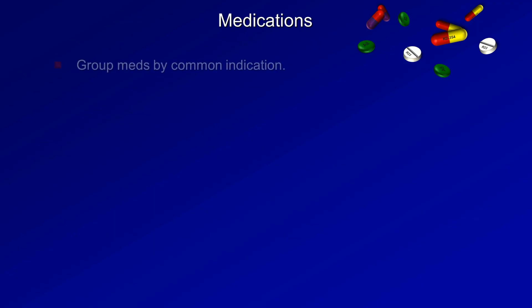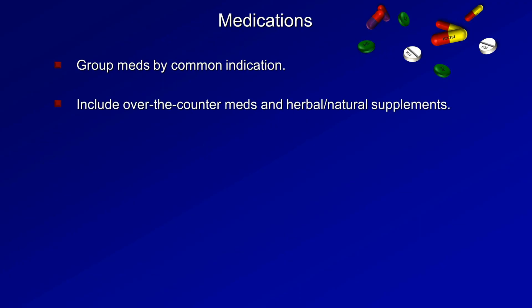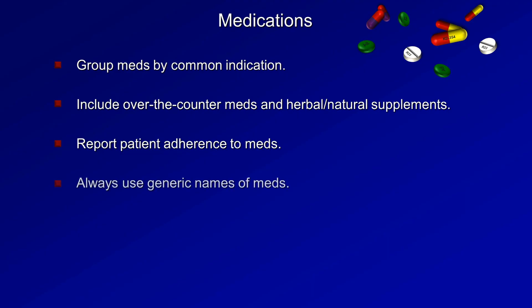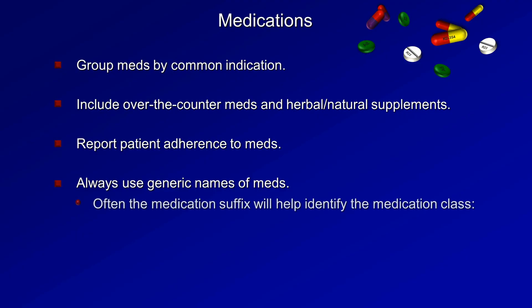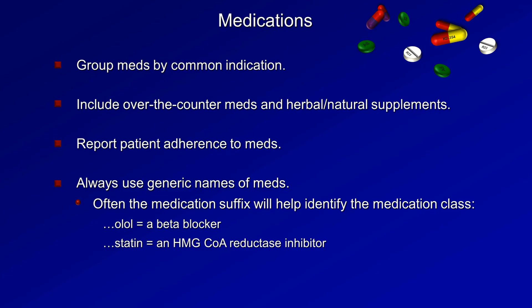For medications, group them by common indication — this helps the listener remember them and identifies any medication class that may be missing given the patient's past medical history. Include over-the-counter meds as well as herbals and natural supplements, report patient adherence, and always use generic names. Generic suffixes help identify medication class — for example, a med ending in '-olol' is likely a beta blocker, and one ending in '-statin' is definitely an HMG-CoA reductase inhibitor. Generic names are also consistently used on formal exams.